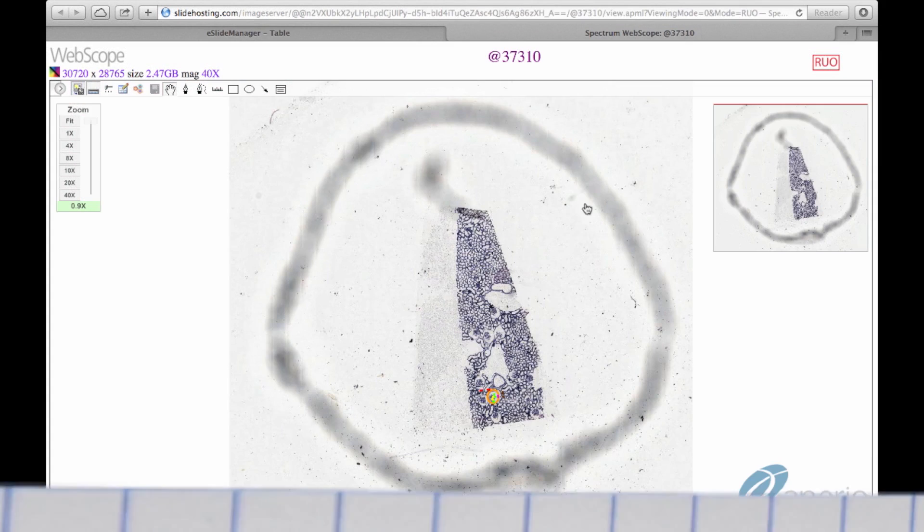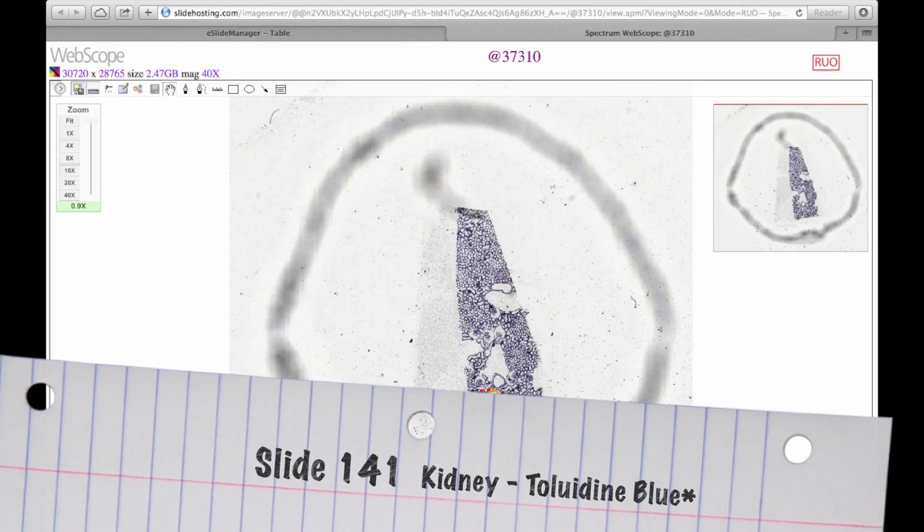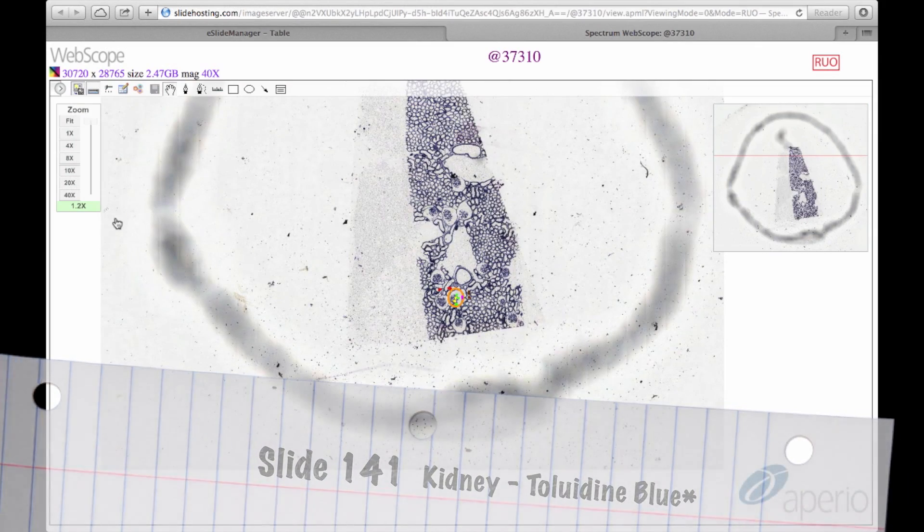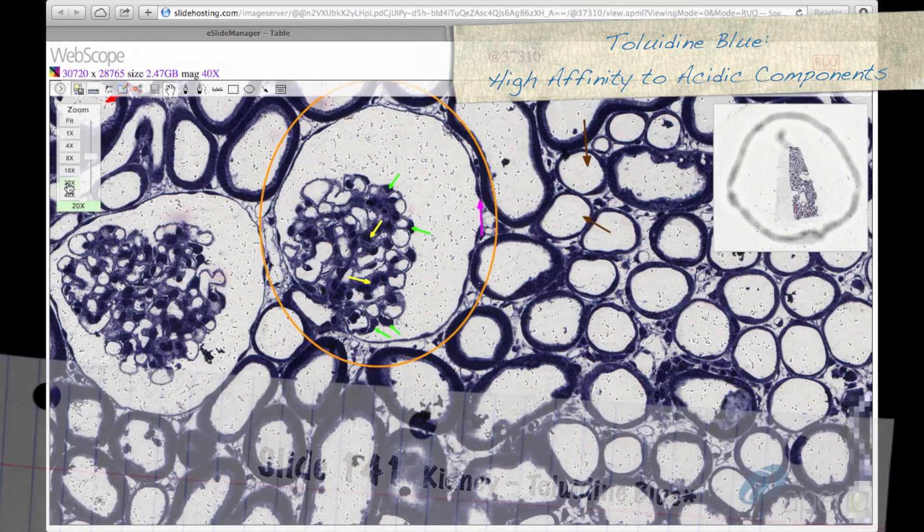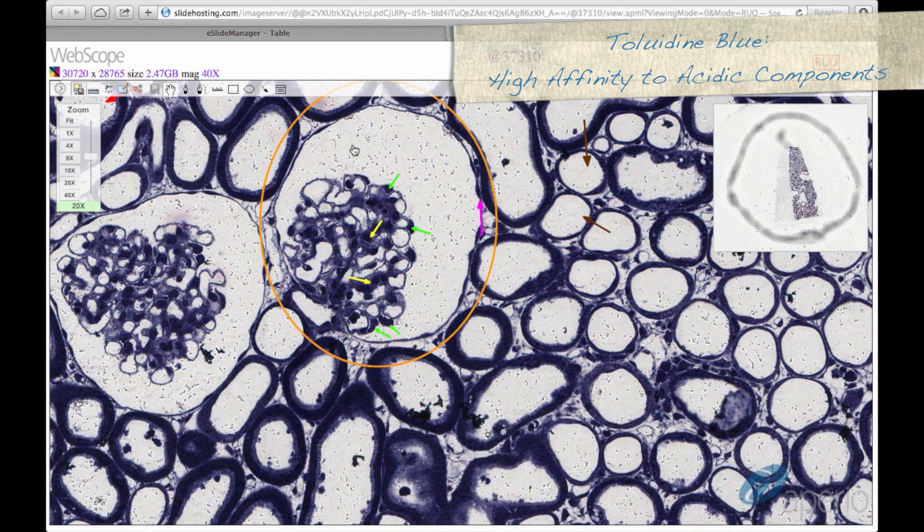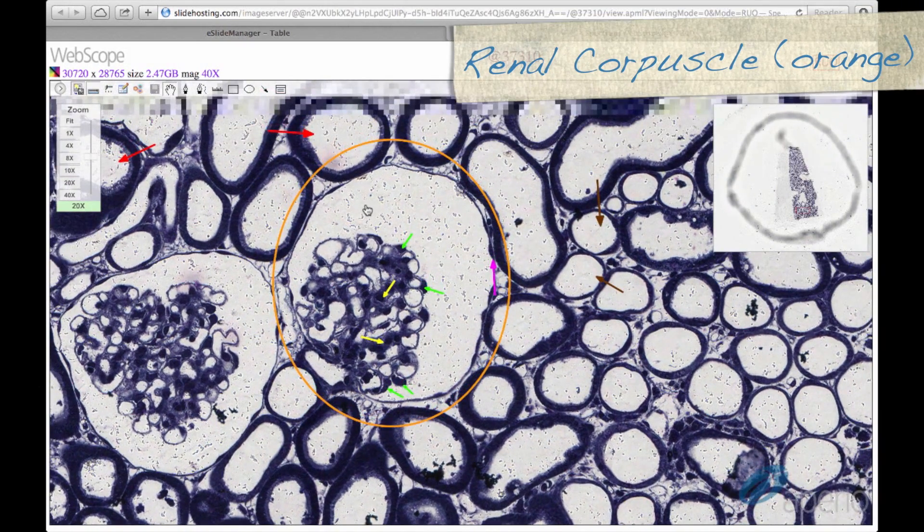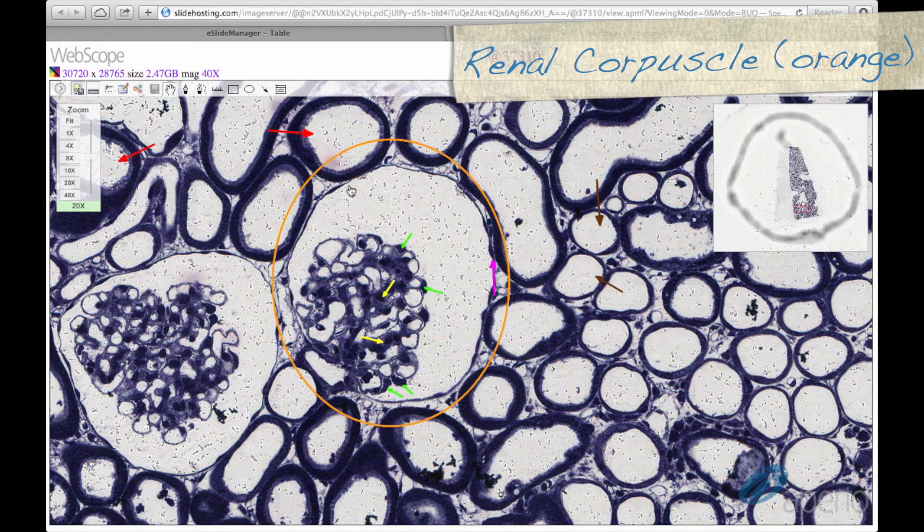We have now moved to slide 141, which is a section of kidney stained with toluidine blue, which has an extremely high affinity for acidic components of tissue. Again, we can find the renal corpuscle, circled here in orange. This stain allows us to identify the cell types located within the renal corpuscle.